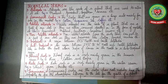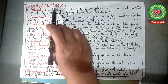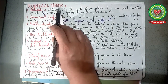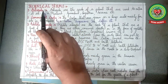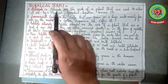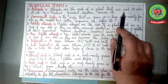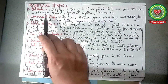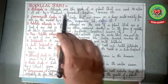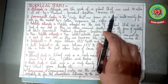Before proceeding with the book reading, let us discuss a few technical terms covered in the topic of oilseeds. Number 1, oilseeds: oilseeds are the seeds of a plant that are used to extract oil — for example, mustard, groundnut, soyabean, sesame, etc.